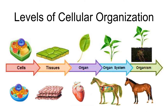Cells are organized into tissues — groups of cells with a similar appearance and function. Different types of tissues are further organized into functional units called organs. Groups of organs that work together make up an organ system. The most complex level of organization is the organism level, where all organ systems function in animals or plants.